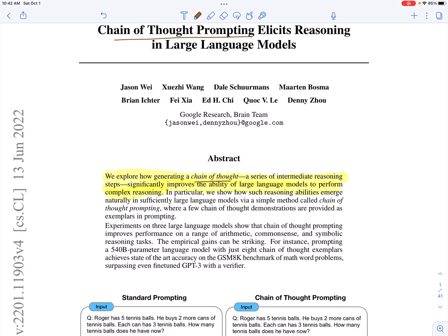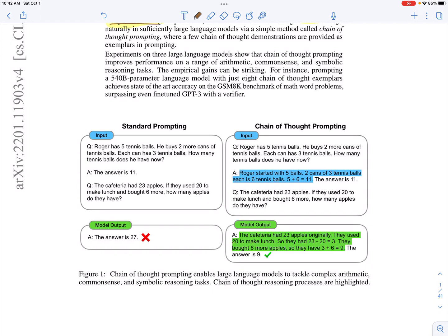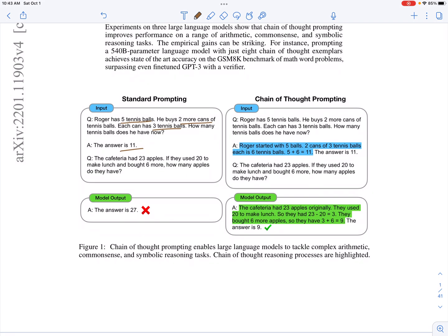This figure illustrates their idea. In standard prompting, you have one example and you ask the model to answer a question based on that example. The question is: Roger has five tennis balls and buys two more cans of three tennis balls each — how many does he have now? This requires the model to understand semantics, translate the question into an arithmetic equation, and give an answer. In standard prompting, you just tell the model the answer, and it is supposed to learn from that one example and extrapolate to new questions.